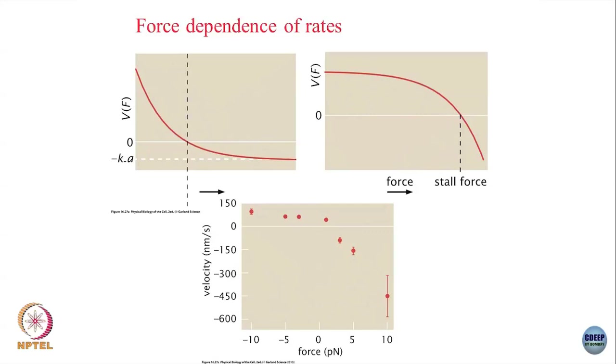This model is not perfect because many assumptions were made, but it qualitatively reproduces some features seen in experiments — particularly the force-velocity relationship. You can tune the bare k+ and other parameters to get a good match with experiments, making this an effective model for this type of motor. One easy quantity to measure experimentally and calculate theoretically is this force dependence of velocity. You can calculate other quantities as well — for example, a measure called randomness.